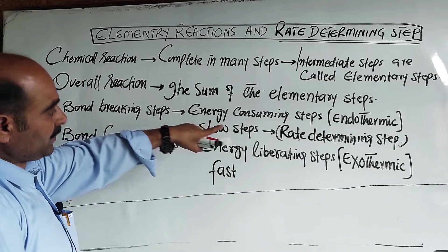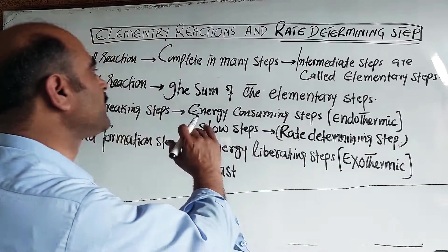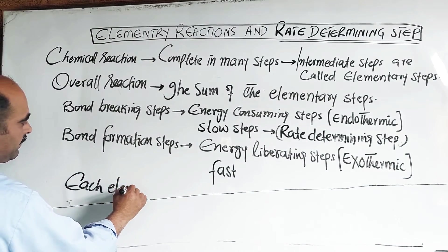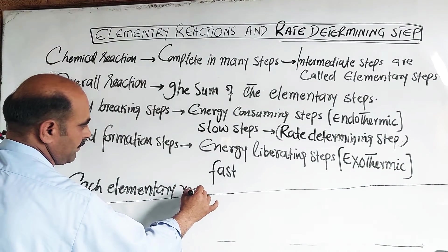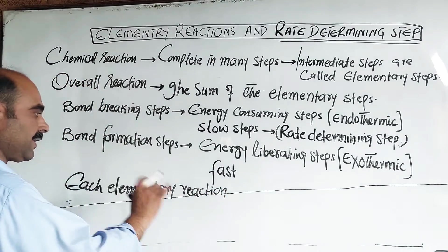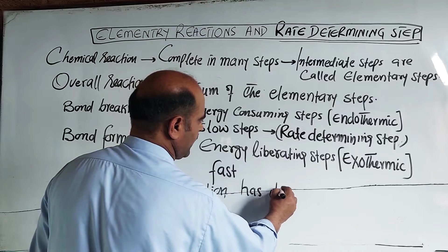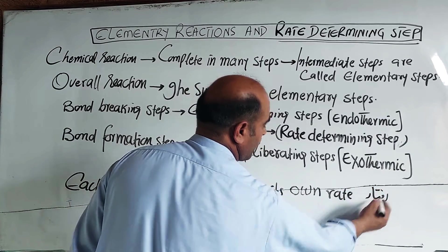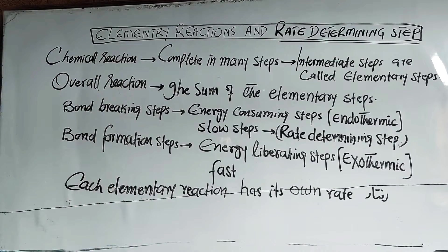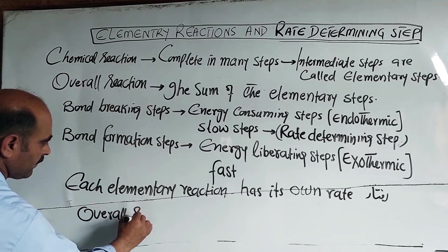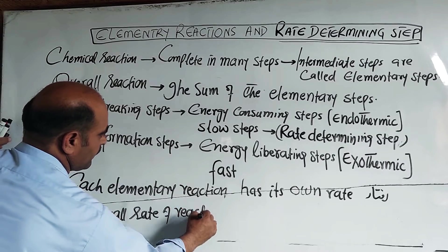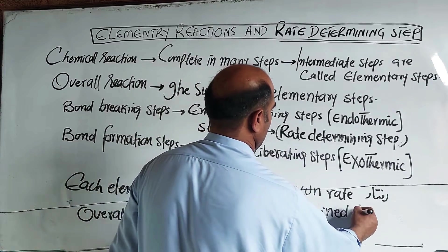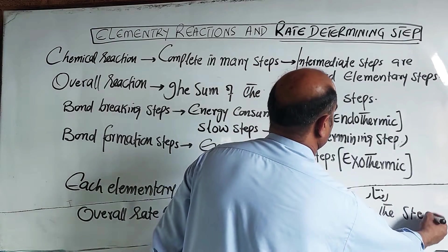Each elementary reaction has its own rate. Each elementary step or reaction has its own rate. The overall rate of the reaction will be determined by the step that has the slowest rate. The overall rate of a reaction will be determined by the elementary step which has the slowest rate.